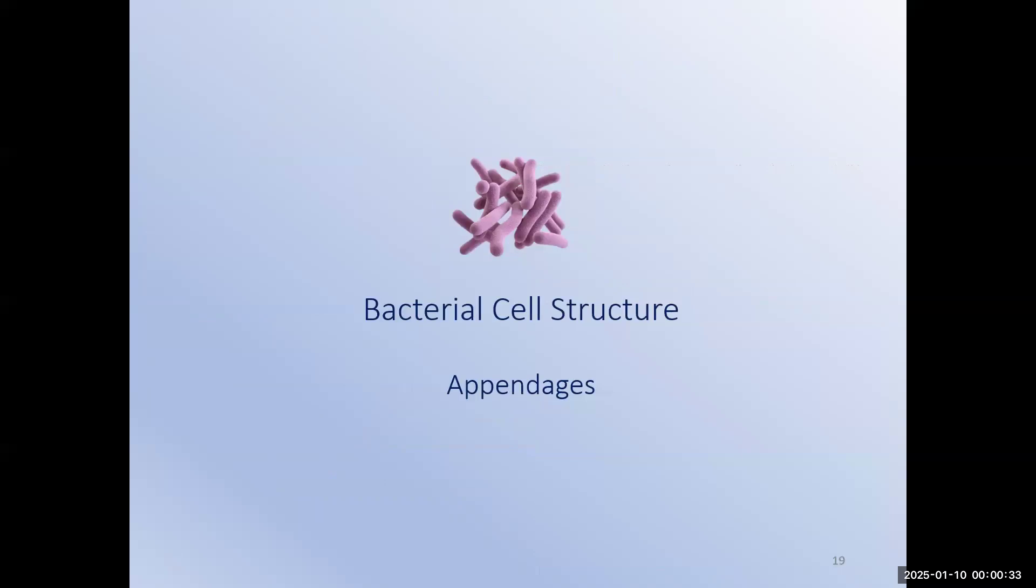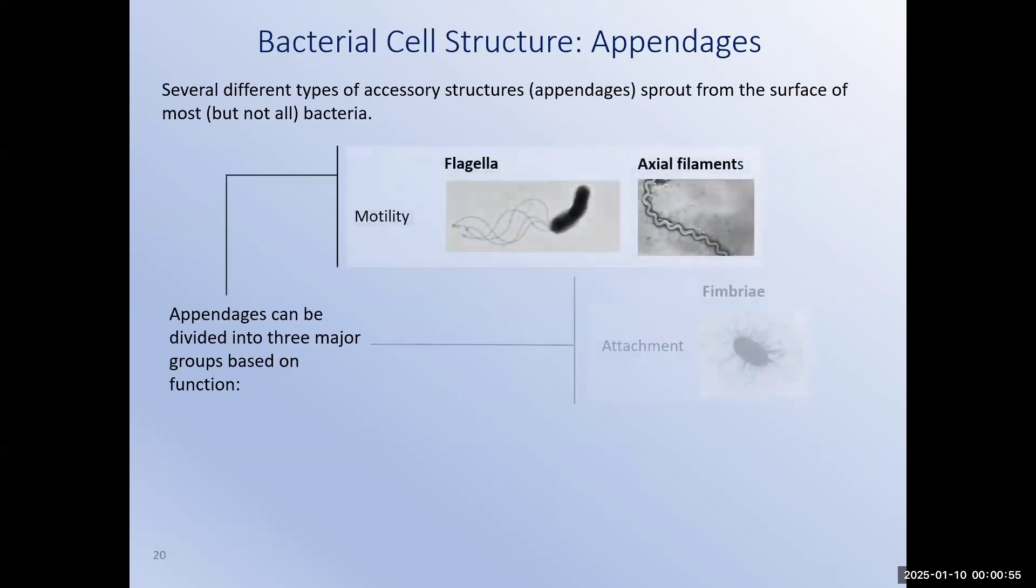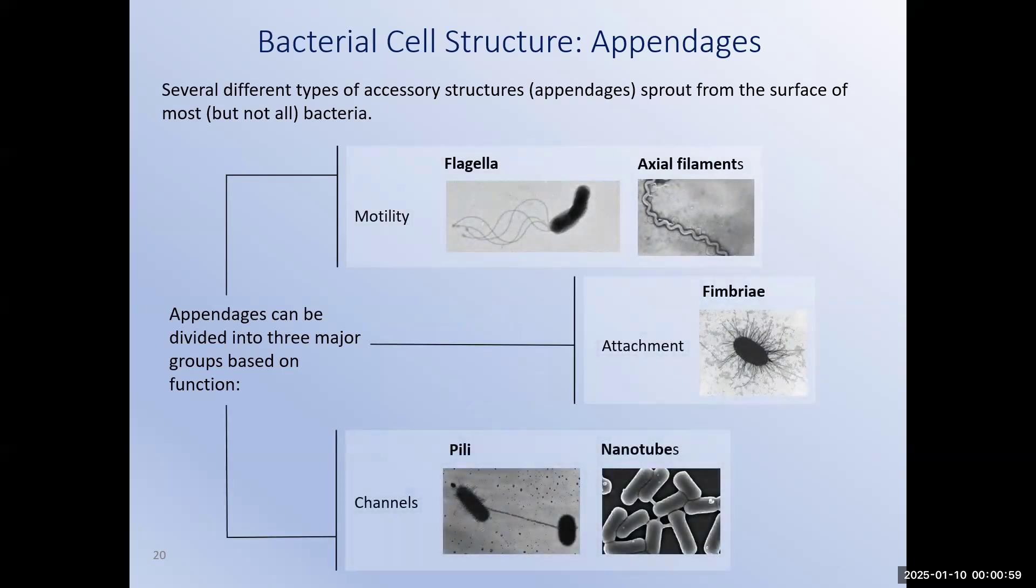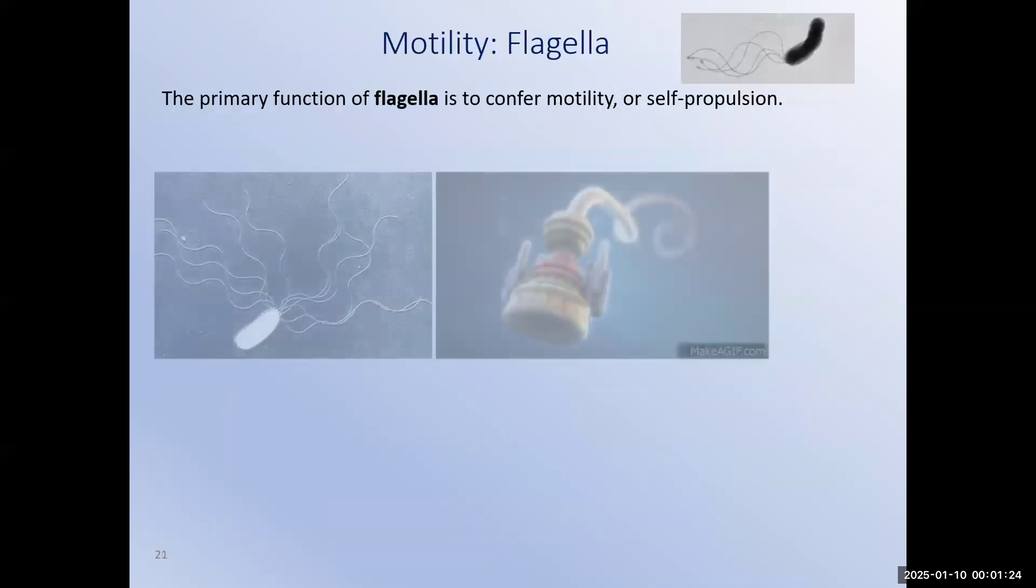Now, most bacteria, especially the ones that make us sick, have structures that extend off of the cell surface. Some of these are the very reason that the bacteria makes us sick in the first place. Just as your arms and legs, commonly referred to as your appendages, extend away from your trunk, these structures extending from the cell surface are also known as appendages. The appendages formed by bacteria can be divided into three classes depending on their function. Movement or motility, attachment, and channel formation. Two structures that provide the bacterium with motility are flagella and axial filaments. Bristle-like structures called fimbriae are used by bacteria for attachment to surfaces, including surfaces like us. Pili and nanotubes form channels between neighboring bacteria, but for slightly different purposes.